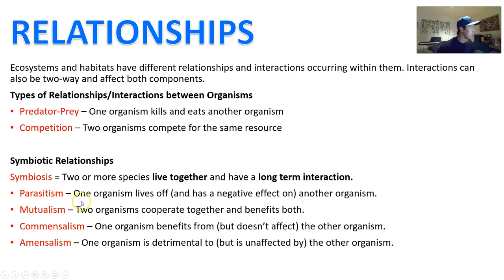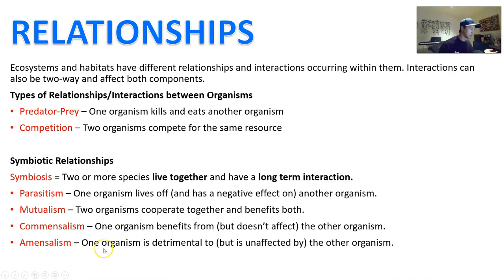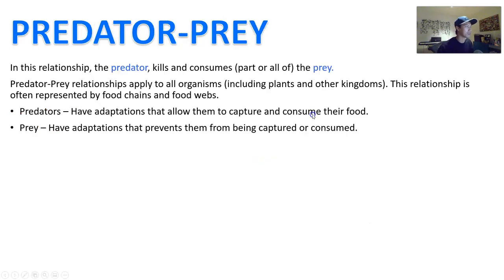Parasitism is when one organism lives off another one. Mutualism is when two of them cooperate. Commensalism is when one organism is going to benefit but the other one is unaffected. And amensalism is when one organism is detrimental to or affecting badly the other organism, but doesn't get affected by it.